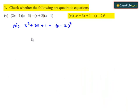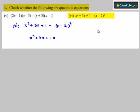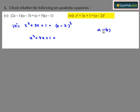On left hand side we have x square plus 3x plus 1 and on right hand side we have x minus 2 whole square. We know that a minus b whole square is equal to a square minus 2ab plus b square.